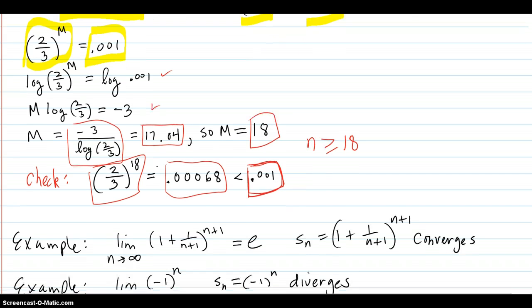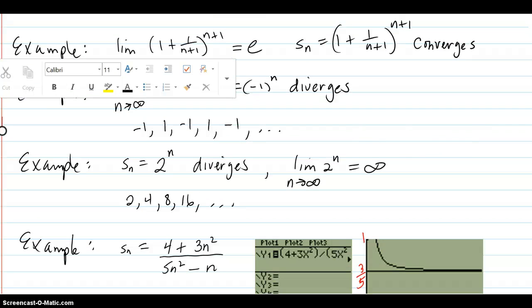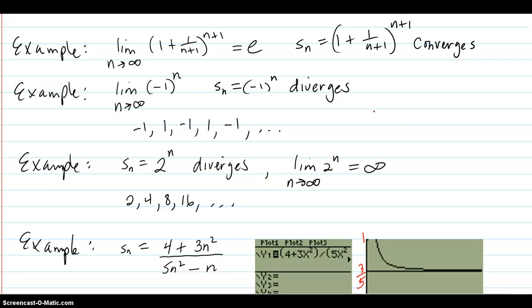So here's another example. We have here this particular limit: 1 plus 1 over n plus 1 to the n plus 1. That limits out to e as we've seen, so that means that the sequence converges. Also, negative 1 to the n, this sequence here, that diverges because when you go through the sequence terms, they flip-flop between negative 1 to 1 and negative 1 to 1, negative 1. They're never going to converge.